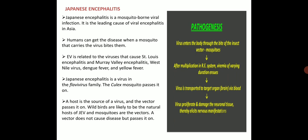Humans can get the disease when a mosquito that carries the virus bites them. Japanese encephalitis virus is related to the viruses that cause St. Louis encephalitis, Murray Valley encephalitis, West Nile virus, Dengue fever and yellow fever. This virus belongs to the flavivirus family. The Culex mosquito passes it on. A host is a source of virus and the vector passes it on. Wild birds are likely the natural host of Japanese encephalitis and mosquitoes are the vector. A vector does not cause disease but passes the pathogen.